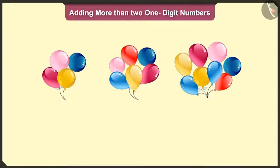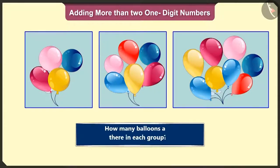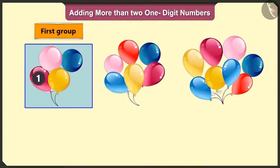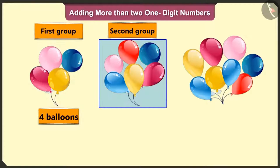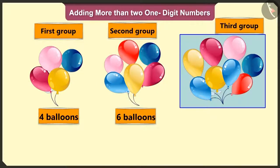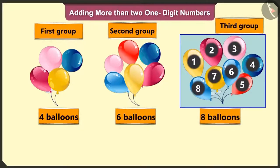Can you tell me how many balloons are there in each group? In the first group, one, two, three and four balloons. In the second group, one, two, three, four, five and six balloons. And in the third group, there are one, two, three, four, five, six, seven and eight balloons.